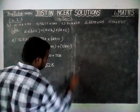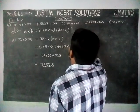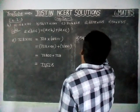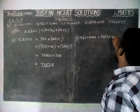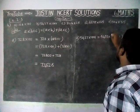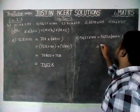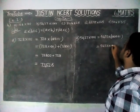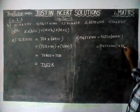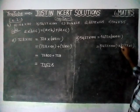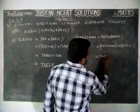Next question, option B. 5,437 into 1001. We are going to separate 1001 as 1000 plus 1. So 5,437 into 1000, plus 5,437 into 1. A number multiplied with 1 gives the same number, so 5,437.